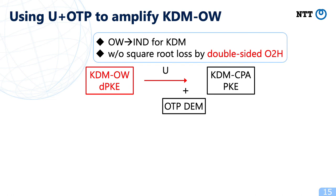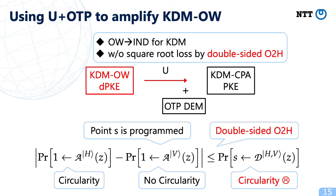Thus, in the U-plus-one-time-pad construction, we focus on amplification from one-way security to IND security for KDM security, not from non-KDM security to KDM security. More precisely, we show that the KDM security of U-plus-one-time-pad can be reduced to the KDM one-way security of the deterministic public-key scheme without square root loss. In fact, if the deterministic public-key scheme satisfies KDM one-way security, we can bound the right-hand side probability obtained by applying the double-sided one-way-to-hiding lemma and complete the entire proof without square root loss.